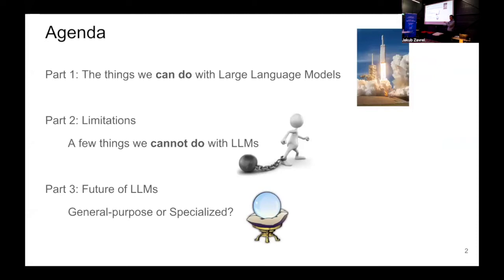Part one of the talk will cover things we can do with large language models. Part two will be about limitations — things we cannot do yet with these types of models. And in part three, I'd like to briefly discuss some features of these large language models, in particular whether we'll ever have general models trained on diverse data, or whether we'll be specializing them further and further, like we do with specialists in our society.